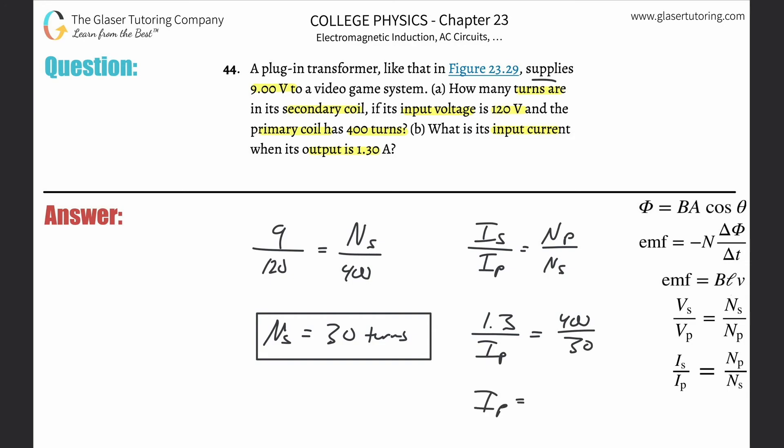So now all you have to do is a little simple algebra here. So it's basically going to be 1.3 times 30 divided by 400. And this is going to be 9.75 times 10 to the minus 2. And that's in terms of amps. So that's it guys.